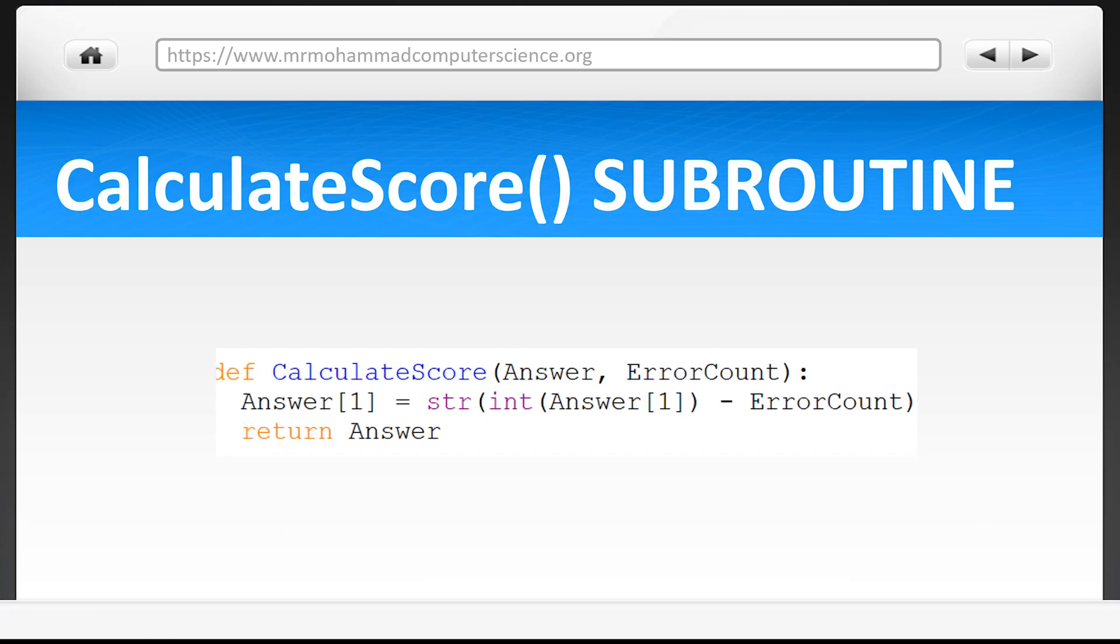Here's the CalculateScore subroutine. You can see it takes in the values answer and error count from the NumberPuzzle subroutine. Answer is an array which contains the name of the puzzle then zero and zero again in the first three positions of the array. These values are all strings.